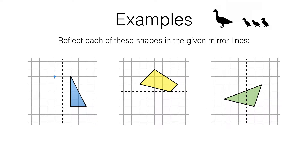Let's have a look at the second corner. This is also one square away from the mirror line, so it would be reflected one square away on the other side over here. We then have to do the same thing for the third corner. This corner is three squares away from the mirror line.